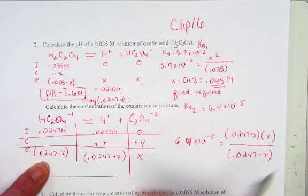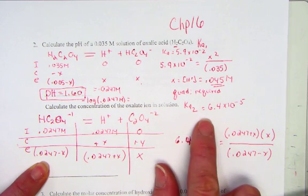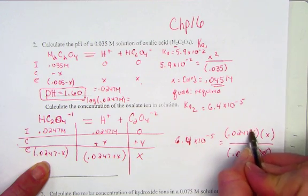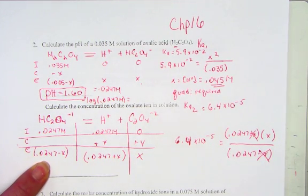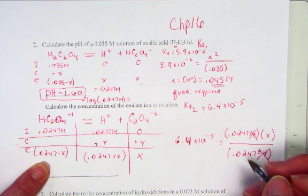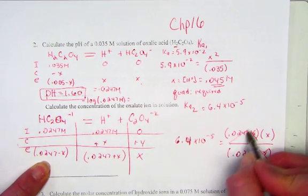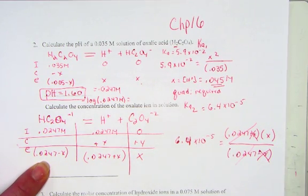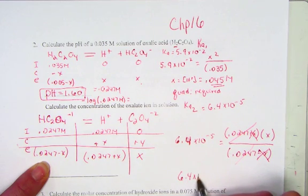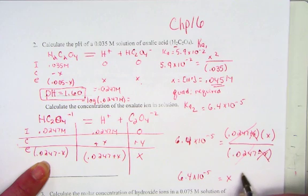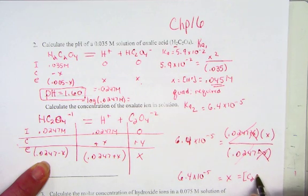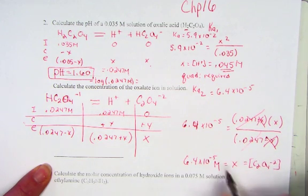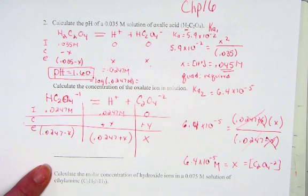Assuming that this number here for the second ionization is significantly smaller than the first ionization, we're allowed to toss out the X. So the plus X and minus X are disregarded. And something interesting happens with the algebra. The concentration of the hydrogen ion indeed matches the concentration of the hydrogen oxalate ion. And 6.4 times 10 to the negative fifth now equals X, where X is representing the oxalate concentration. So the very value of Ka2 becomes the concentration of the oxalate at equilibrium.